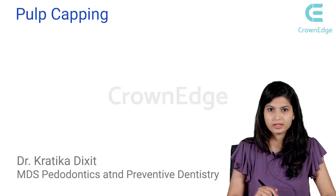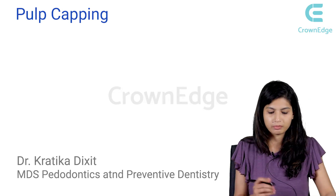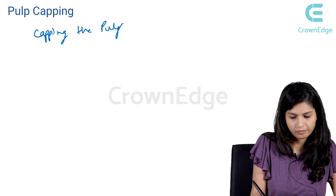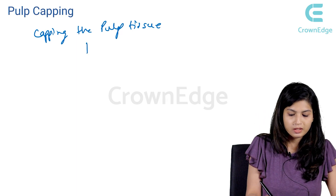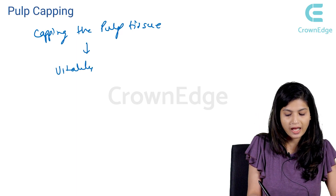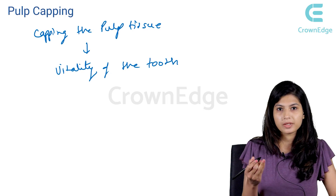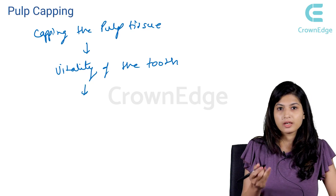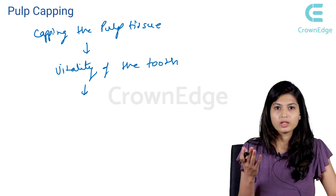The first topic in pediatric endodontics is pulp capping. As the name suggests, it is simply a procedure of capping the pulp tissue. We want to cap the pulp tissue because we want to preserve the vitality of the tooth. Pulp is the source of vitality for the tooth, so we want to preserve it so that the tooth can remain in the oral cavity for a longer duration of time. That is the basic rationale of doing the pulp capping procedure.